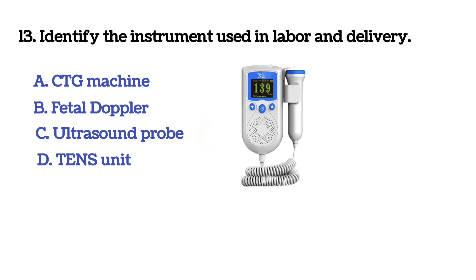Next question: identify the instrument used in labor and delivery. Option A: CTG machine. Option B: fetal Doppler. Option C: ultrasound probe. Option D: TENS unit. The answer is B, fetal Doppler.